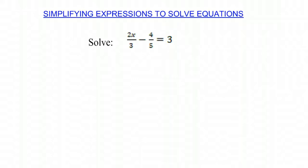Today we're working on solving equations, but first we have to simplify the expression before we can solve the equation. So we're looking at 2x divided by 3 minus 4 divided by 5 equals 3.